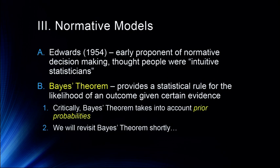Bayes' theorem takes into account what we call prior probabilities. For example, if a woman goes in for a mammogram and it comes back positive, Bayes' theorem wouldn't just consider the probability that the mammogram is correct — it would also include the probability that she had breast cancer when she walked in. No medical test is 100% accurate, so by taking into account the prior probability, we actually get more accurate information.